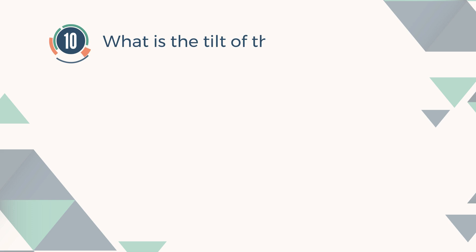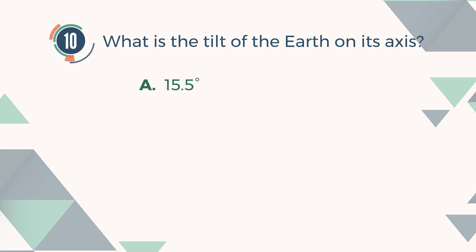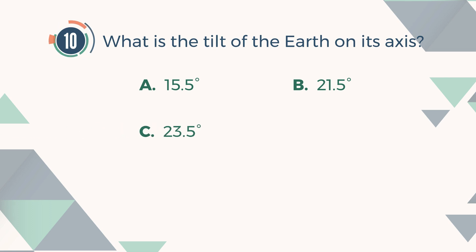Number 10. What is the tilt of the earth on its axis? A. 15.5 degrees. B. 21.5 degrees. C. 23.5 degrees. D. 24 degrees.